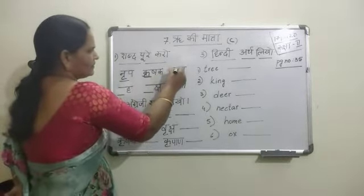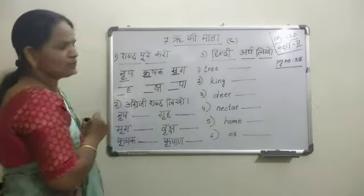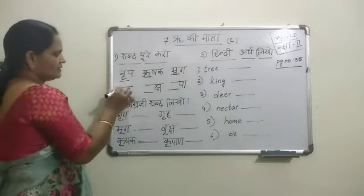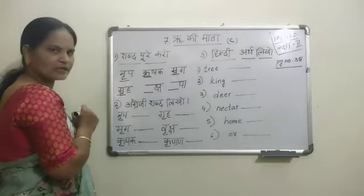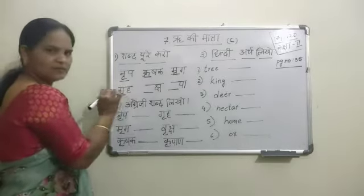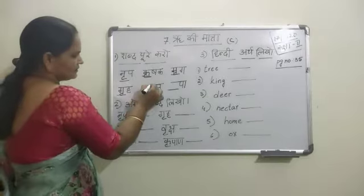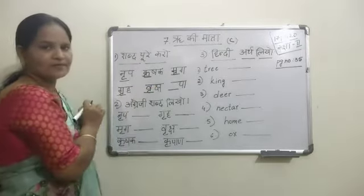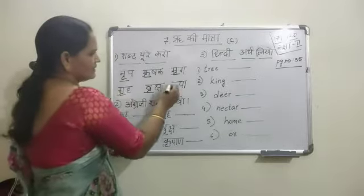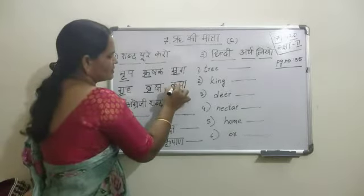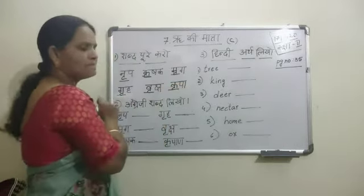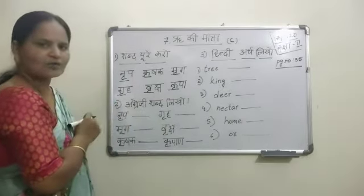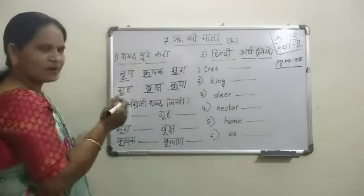Next, see: Ma ki Ruu Matra — say Mruga. Mrug means Deer. And next: Na ki Ruu Matra — Krusha. Krusha means Three. Next: Ka ki Ruu Matra — Krusha, Pa. Pa ki A Matra — Pa. Krusha means Please.